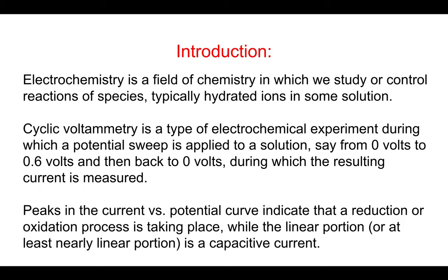Electrochemistry is a field in chemistry in which we study reactions of species, which are typically hydrated ions in some solution. Cyclic voltammetry is a field of electrochemistry, however this is a rather unique field. In cyclic voltammetry, we're going to apply a potential sweep across some conducting solution. In our case, we're going to go from 0 volts to 600 millivolts back down to 0 volts. During this time, the current is measured. We'll see peaks — these peaks are typically reduction or oxidation processes. The linear portion of our current is usually a capacitive current produced by the background, the working electrolyte. In our case, one molar KCl.